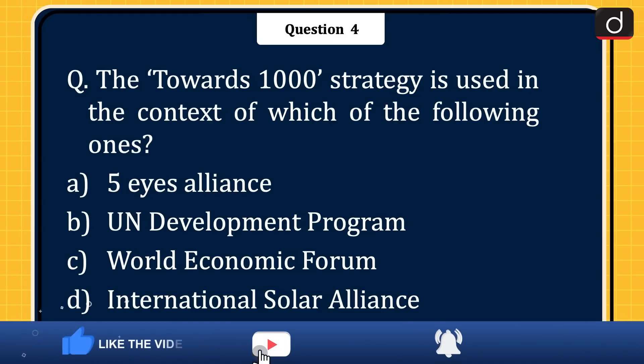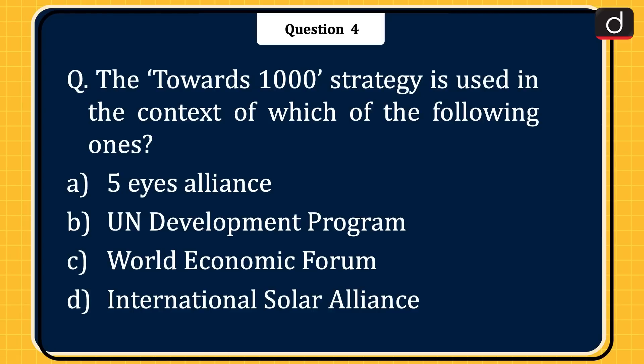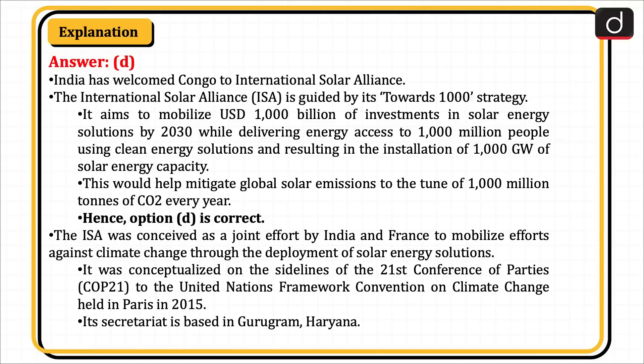Next question: the Towards 1000 strategy is used in the context of which of the following? Options: Five Eyes Alliance, UN Development Program, World Economic Forum, or International Solar Alliance? The correct answer is option D, International Solar Alliance. India has welcomed Congo to the International Solar Alliance. The ISA is guided by its Towards 1000 strategy, which aims to mobilize 1,000 billion US dollars of investments in solar energy solutions by 2030, deliver energy access to 1,000 million people using clean energy solutions, and result in the installation of 1,000 GW of solar energy capacity. This would help mitigate global solar emissions to the tune of 1,000 million tons of CO2 every year.